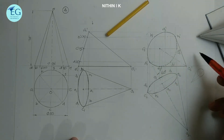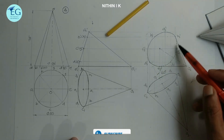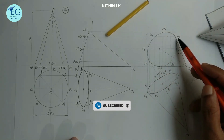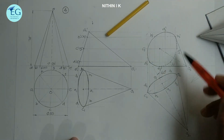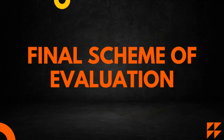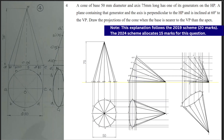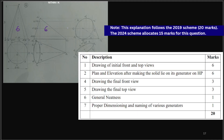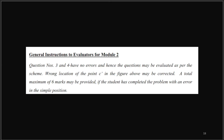This is the final answer with 60 degrees inclination. The curve is tangent and we can change the generators. The marks are 6 plus 6 plus 2 for neatness and dimension. These are the instructions.